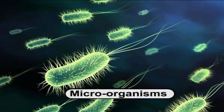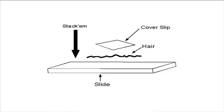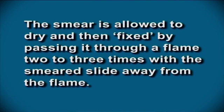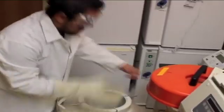Let us learn about dry mounts. Microorganisms, particularly bacteria, being too small need permanent preparations made by drying and fixing them on a clean slide with or without staining. For preparing a dry mount, a drop of distilled water with a small amount of culture is spread as a thin smear on a clean slide. The smear is allowed to dry and then fixed by passing it through a flame 2 to 3 times with the smeared side away from the flame. If desired, this dried and fixed culture may be stained and dried again for observation under the microscope.